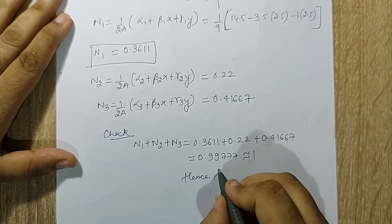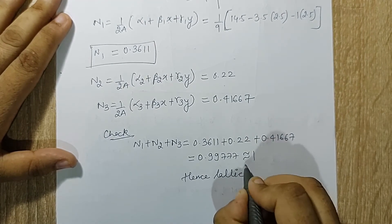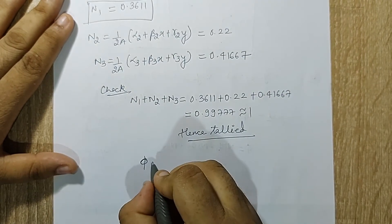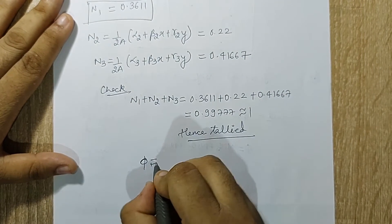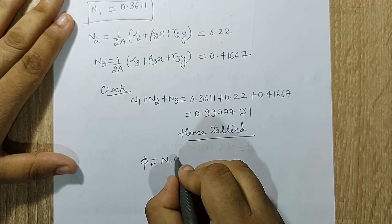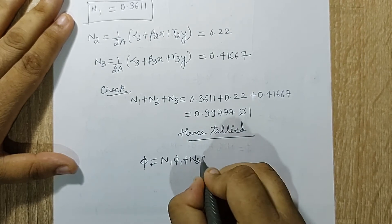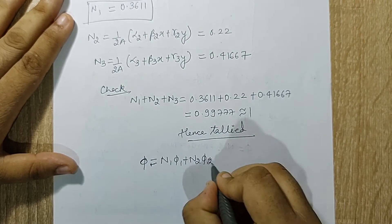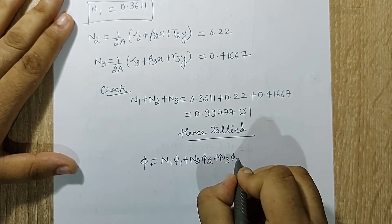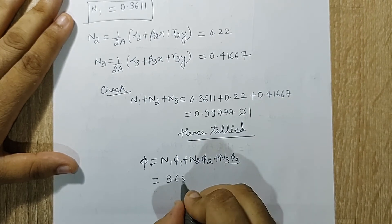Hence I have tallied and checked my solution to be correct. Finally I calculate phi as n1·phi1 plus n2·phi2 plus n3·phi3, and multiplying through I obtain the answer.